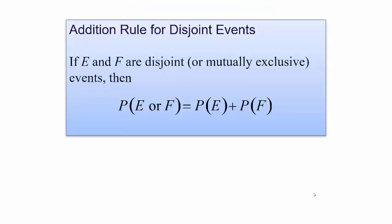The basic rule: if events E and F are disjoint or mutually exclusive, meaning they cannot happen at the same time, then the probability of E or F happening is simply equal to the probability of E plus the probability of F. It's a very simple formula to remember.